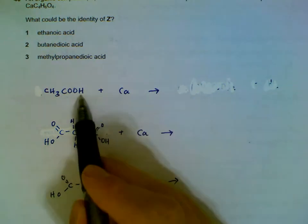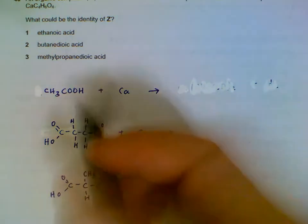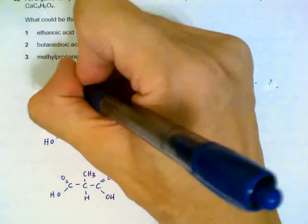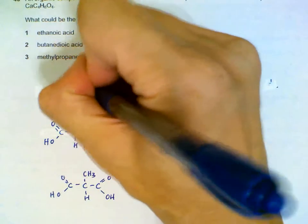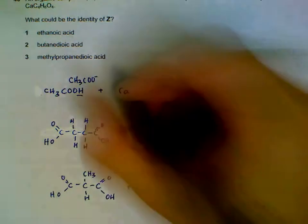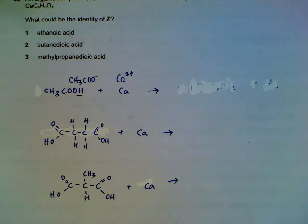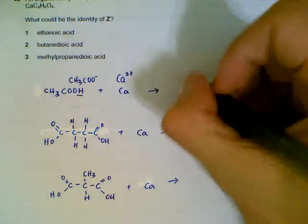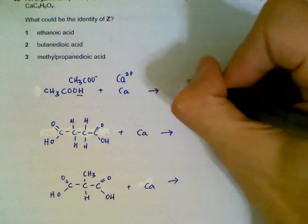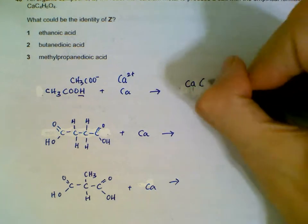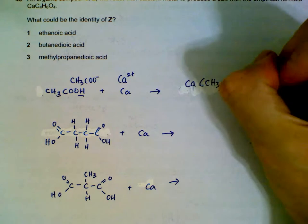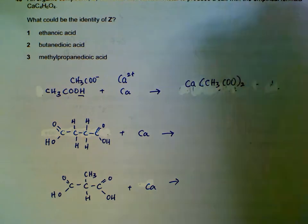Calcium and ethanoic acid - what happens is it will form CH3 COO minus, losing one hydrogen from here, and then it will form Ca2+ for the calcium. And if you were to cross over the formulas, we will have Ca, CH3, COO, but we need two of them.